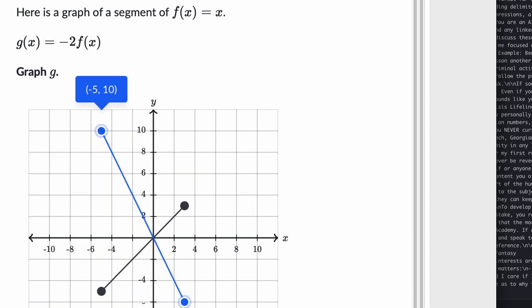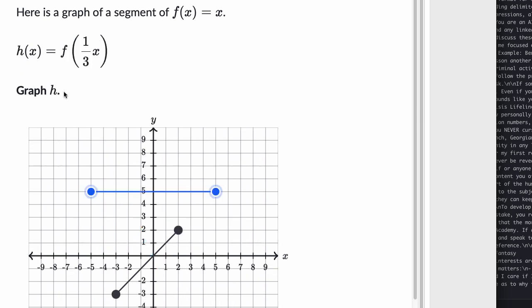Let's do another example, but it's going to be a little different. Here, instead of multiplying times our f(x), we're multiplying the x by a number. Here's a graph of the segment f(x) = x, we see that again. And now they've defined h(x) as being equal to f(1/3 x). So let's graph h.